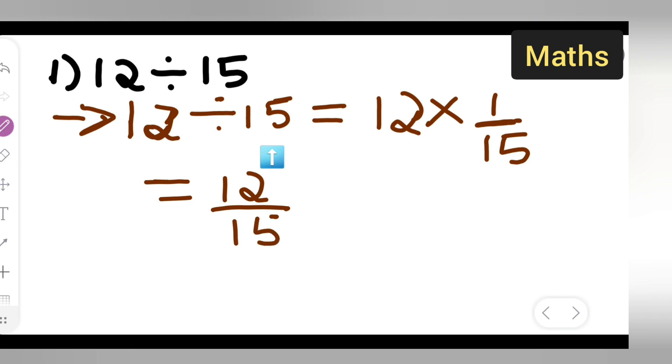Then you can do the cancellation part. How to do in the table of 3? 3 times 4 is 12. 3 times 5 is 15. In the table of 3 itself, both numbers will get cancelled.